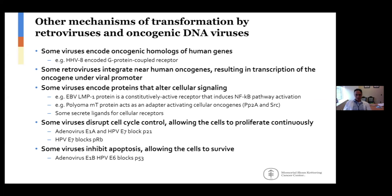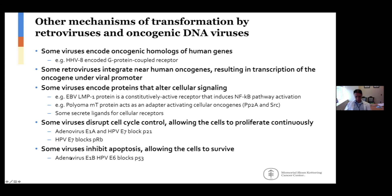Besides carrying oncogenes, both retroviruses and oncogenic DNA viruses may have other mechanisms by which they can transform cells. Some viruses can encode oncogenic homologues of human genes. Some viruses can integrate near human oncogenes and just dysregulate their expression. Some viruses may themselves encode proteins that alter cellular signaling. Some viruses can disrupt cell cycle control, allowing cells to proliferate continuously, such as some of the proteins encoded by adenoviruses or HPV. And some viruses can inhibit apoptosis, which can allow cells to survive despite the virus infection, such as the adenovirus E1B protein or the HPV E6 protein, which both block P53.